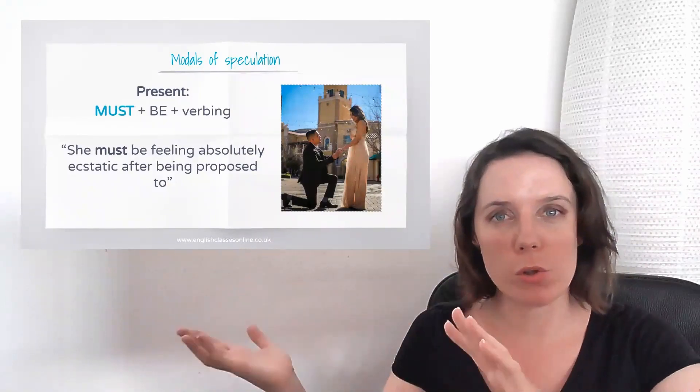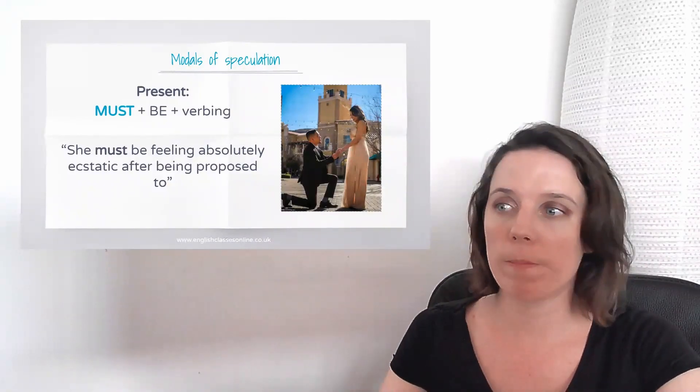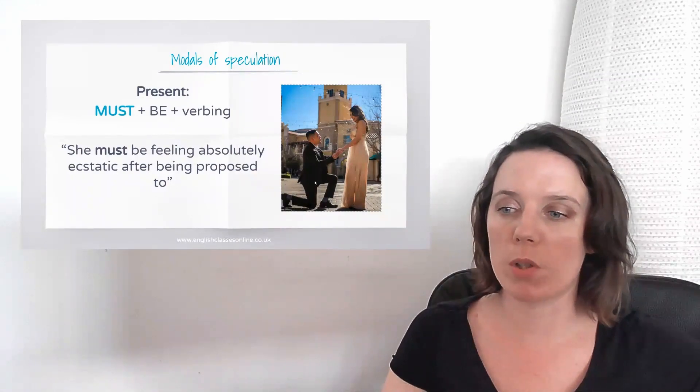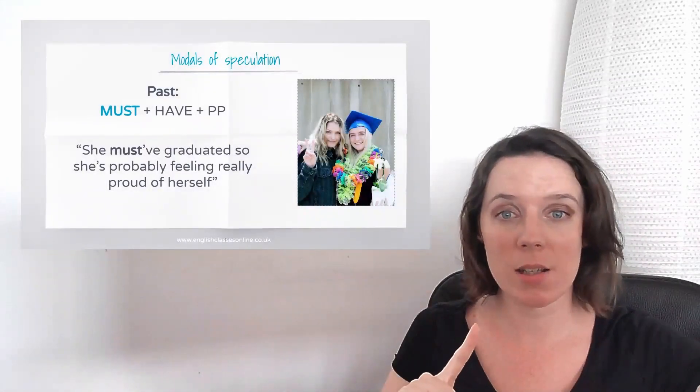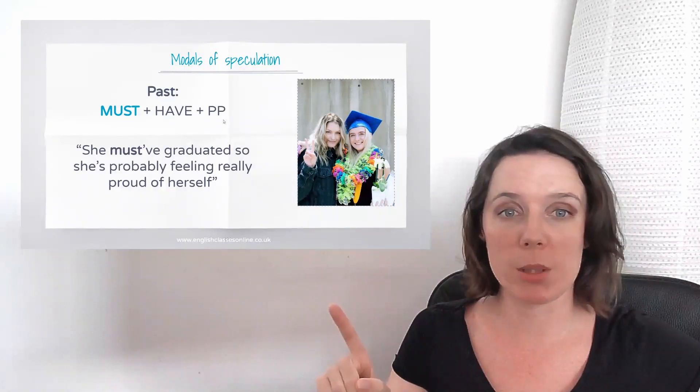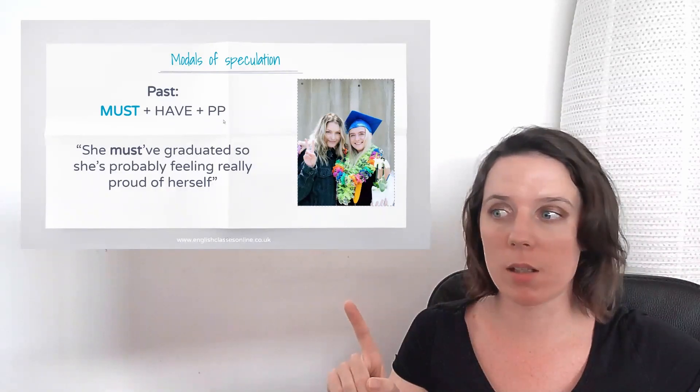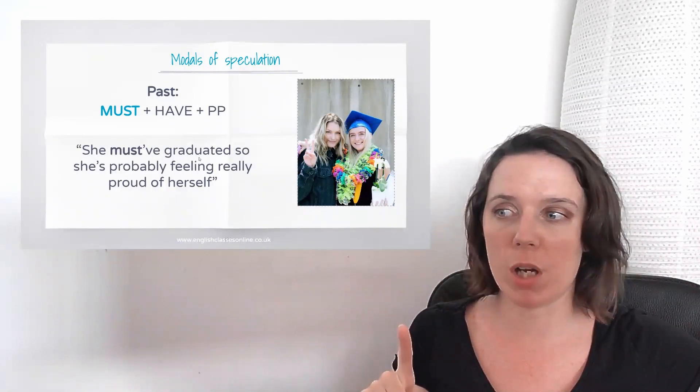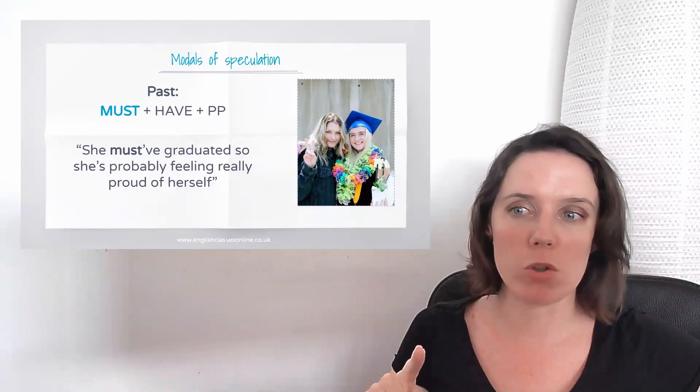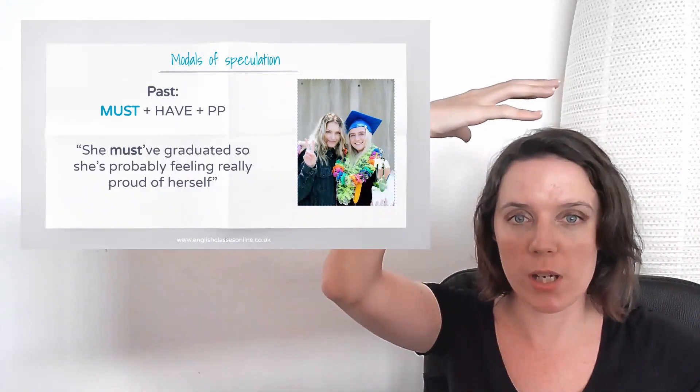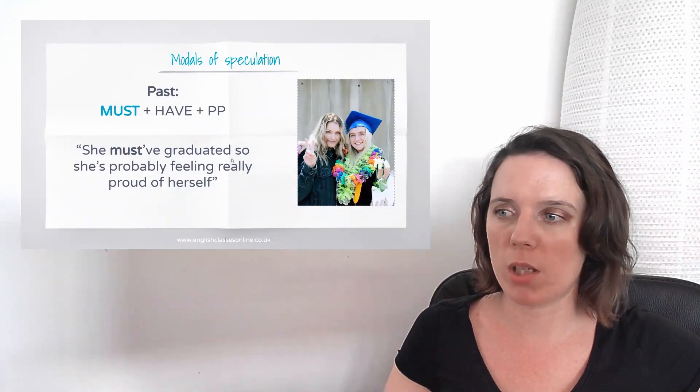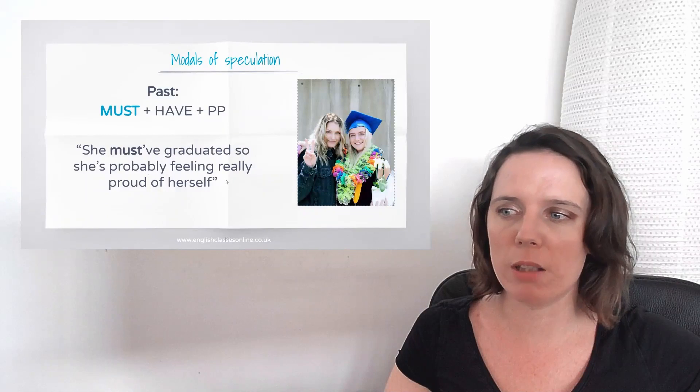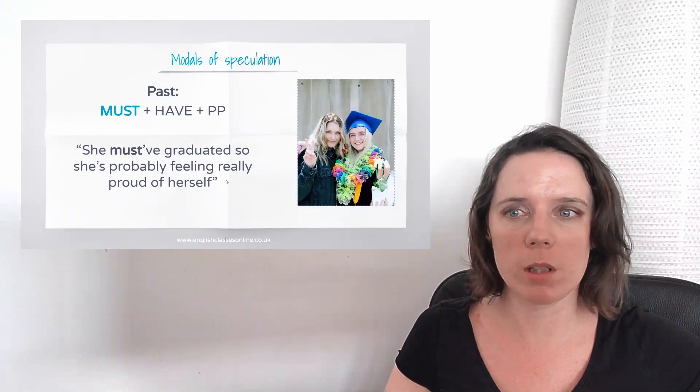If you're not sure, again, you use might be, could be, maybe. If you're a hundred percent sure, we use must be. So that's in the present. If you want to use it in the past, then you need to use have and a past participle. So she must have graduated. I mean, you know, she has, cause she has a graduation hat on her head. So she must have graduated. So she's probably feeling really proud of herself.